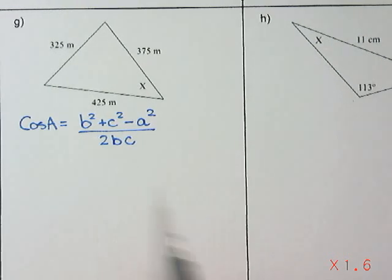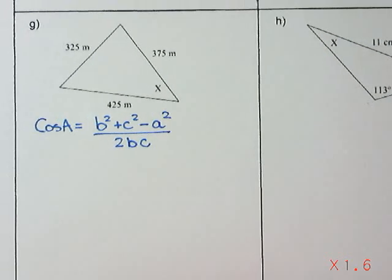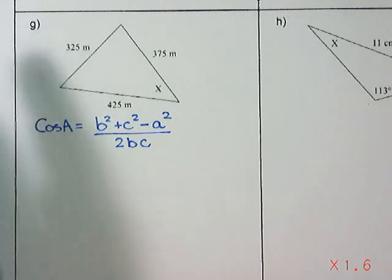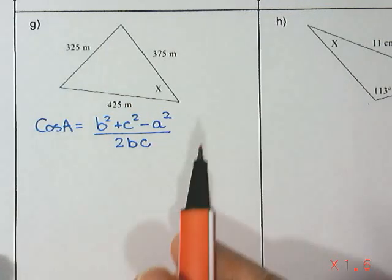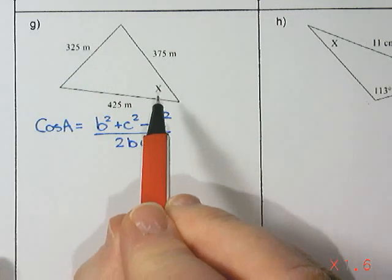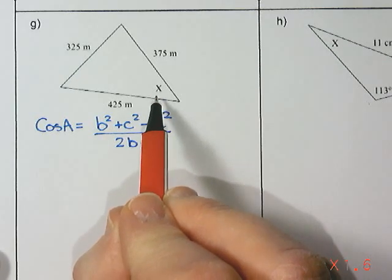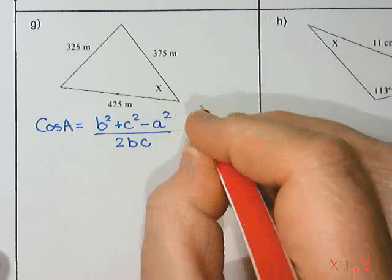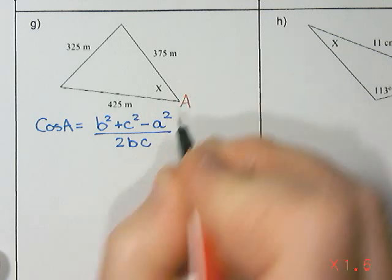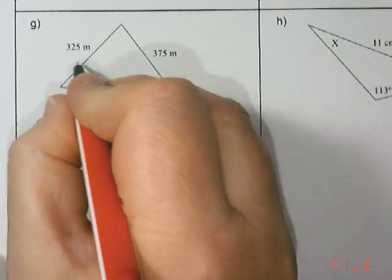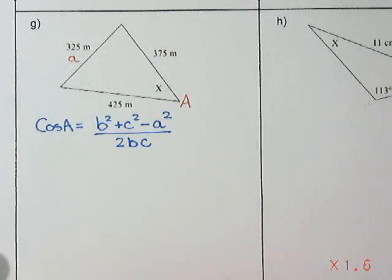Since my formula uses A's, B's, and C's, I need to label my diagram with A's, B's, and C's. So I like to take whatever it is we're solving for, in this case X, and call that A. Since this is an angle, I'm going to label it with an uppercase A, and then the side across from it is my lowercase a.